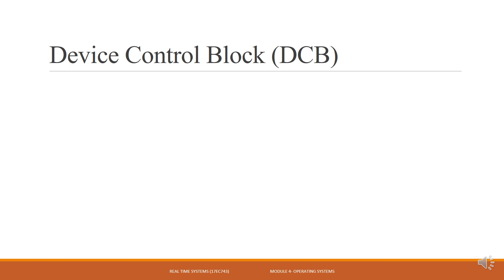Device Control Block is the most important block present in the IOSS. Without this DCB, we cannot get any details of the devices. Device control block is basically used to get information about the devices.